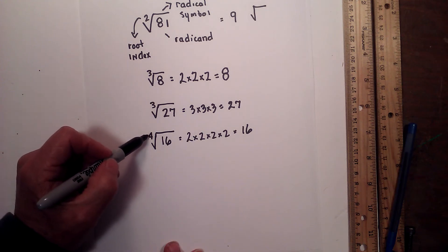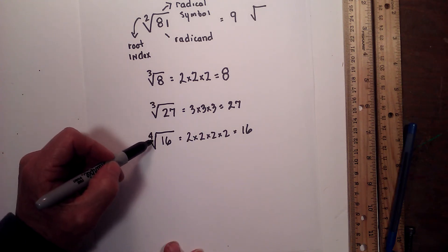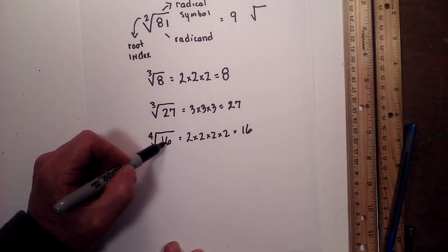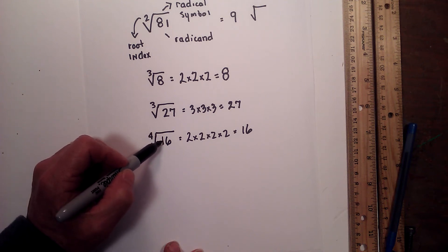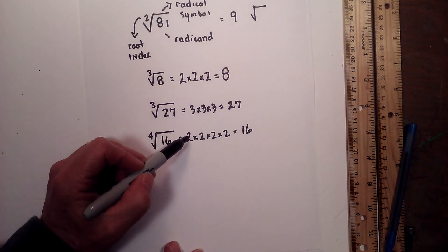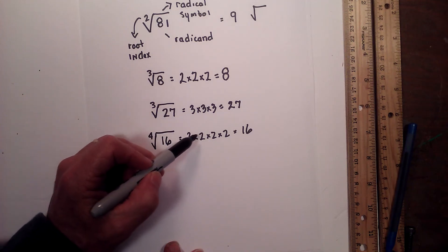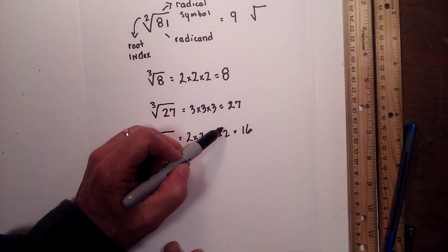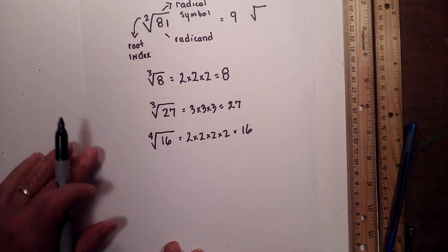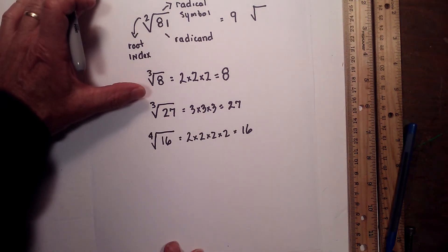Here is another example. You have a root index of 4, the radical symbol, and the radicand is 16. So I need to find a number that multiplied by itself 4 times equals 16, and that is 2 times 2 times 2 times 2, which equals 16.